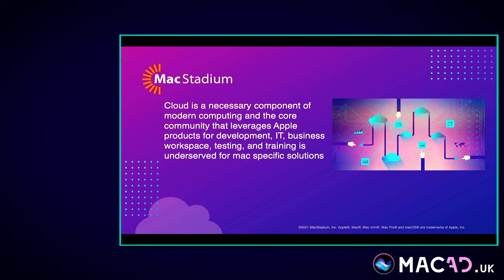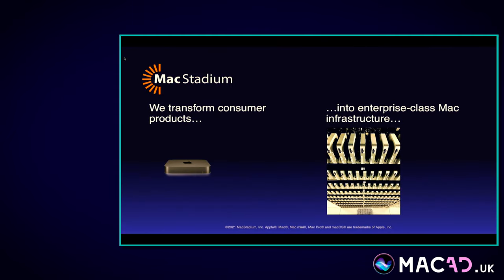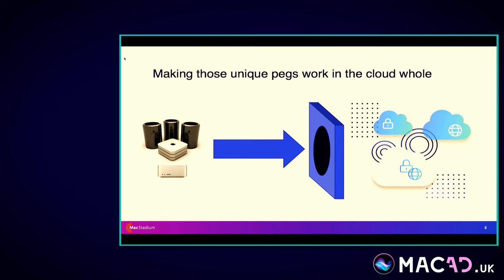Our objective in the world is to make Apple a first-class cloud citizen in capability and technology. We transform the consumer product that sits on your desk into something that looks like a rack in one of our many data centers. We spend a lot of our life trying to figure out how to make all these wonderfully shaped, unique pegs fit into the cloud and work as a modern cloud environment would.